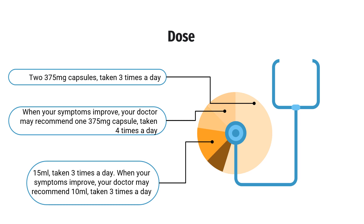The usual dose for children is: ages 2–4 years: 1.25 ml to 2.5 ml of syrup or liquid from a bottle, given 4 times a day. Ages 5–11 years: 5 ml of syrup or liquid from a bottle, given 3 times a day. Ages 12–17 years: 15 ml of syrup or liquid from a bottle, given 3 times a day; when symptoms improve, your doctor may recommend 10 ml taken 3 times a day.